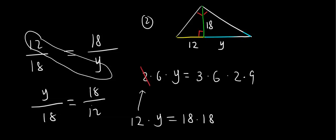So, 2, 2 is gone. 6, 6 is gone. Y equals 3 times 9. 3 times 9. Y is 27.